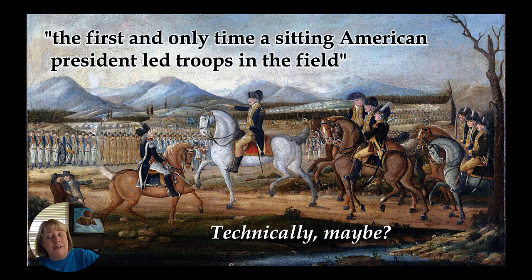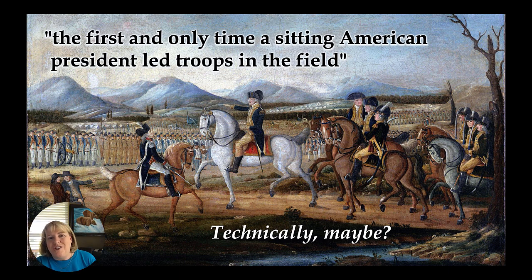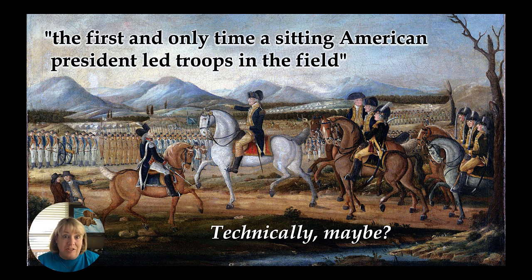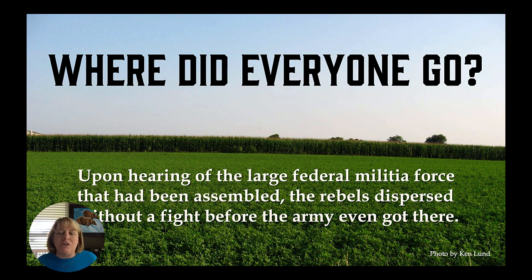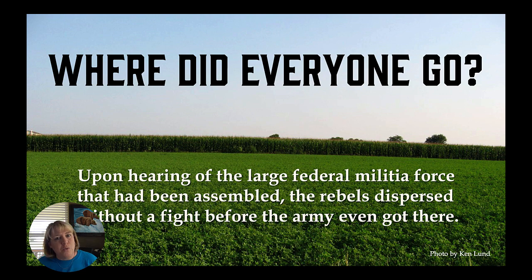Well, technically — in all honesty, Washington rode his horse out to the battlefield, said 'go,' and then rode off. But he was there. What ended up happening was kind of anticlimactic: the 13,000 arrived and everyone was gone. When the rebels heard 13,000 U.S. soldiers were coming, they were out of there. And that was kind of the end of the Whiskey Rebellion.